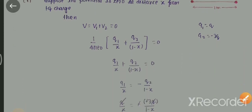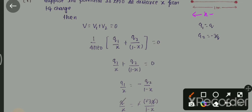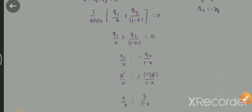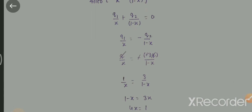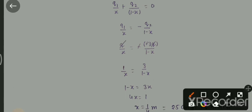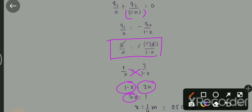तो हमने माना: potential due to plus charge + potential due to minus 3q charge = 0। V₁ कितना आएगा? q₁ upon x, और दूसरी दूरी 1 minus x मानी। तो values रखते हैं: q₁ upon x और q₂ upon (1 − x)। 1 upon 4πε₀ cancel होगा। q₁ = 1, q₂ = minus 3। Cross multiply करेंगे, तो 3x = 1 − x। x को जोड़ते हैं: 4x = 1, result आता है x = 1/4, यानी 25 cm।